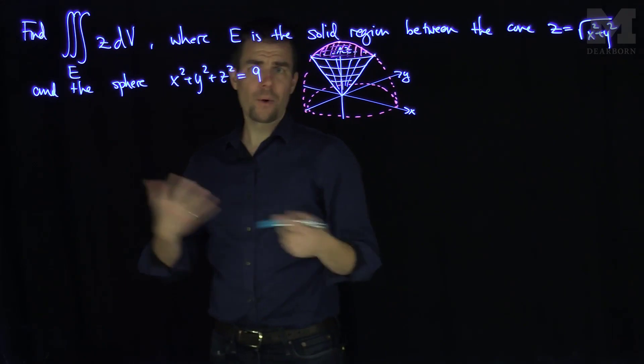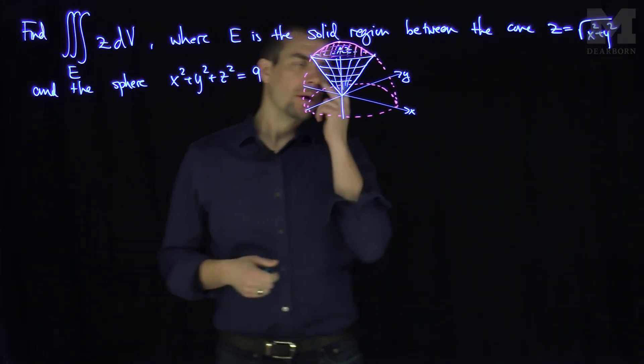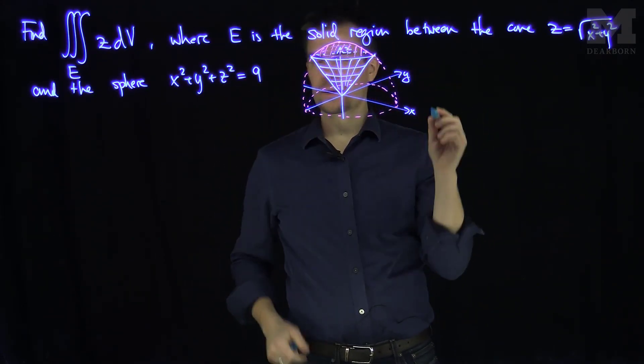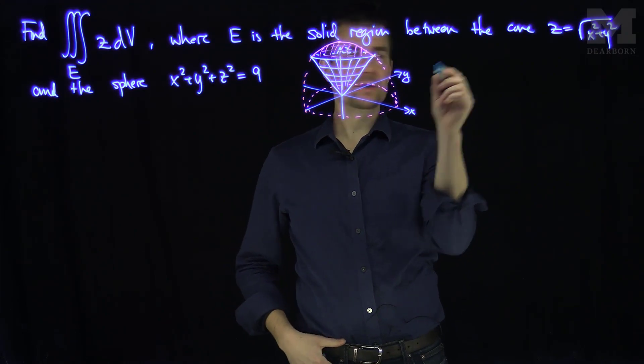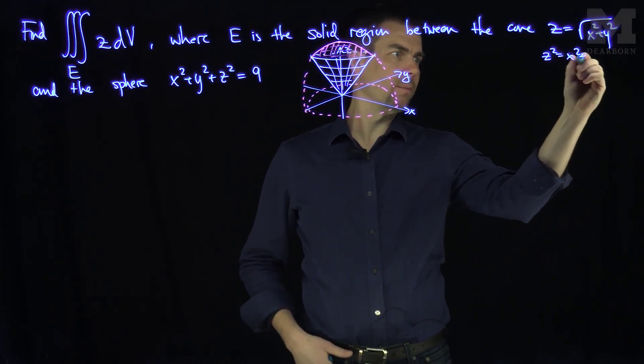Now we need to find out how I would write this region in spherical coordinates, because it's clear that there's a spherical symmetry to this region. So, we can solve this. We can find out where the sphere and the cone intersect by setting these equations equal to each other. So, this would tell me that Z squared is X squared plus Y squared.